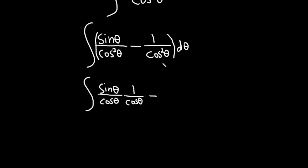So then minus one over cosine squared, that's going to be secant squared.